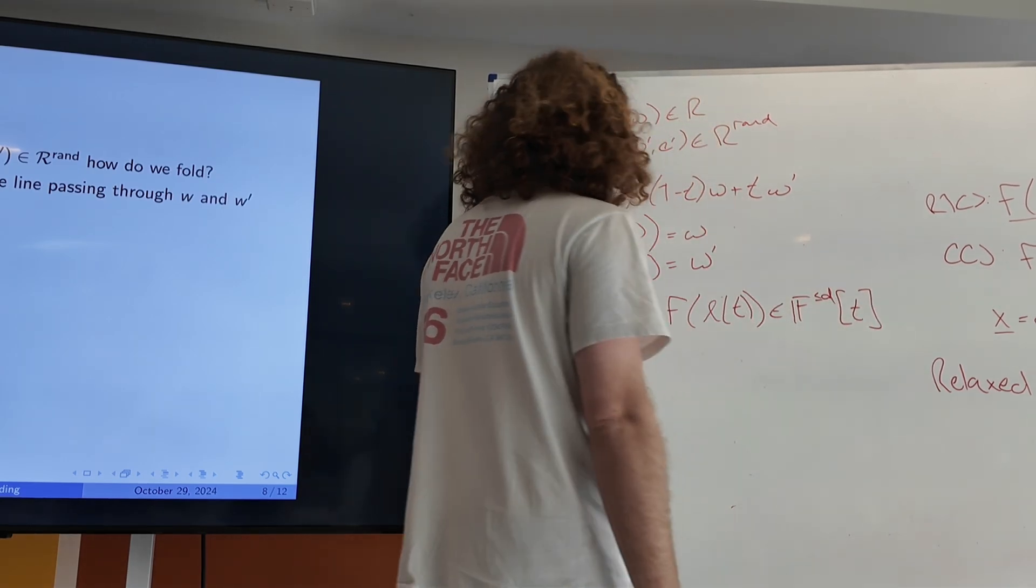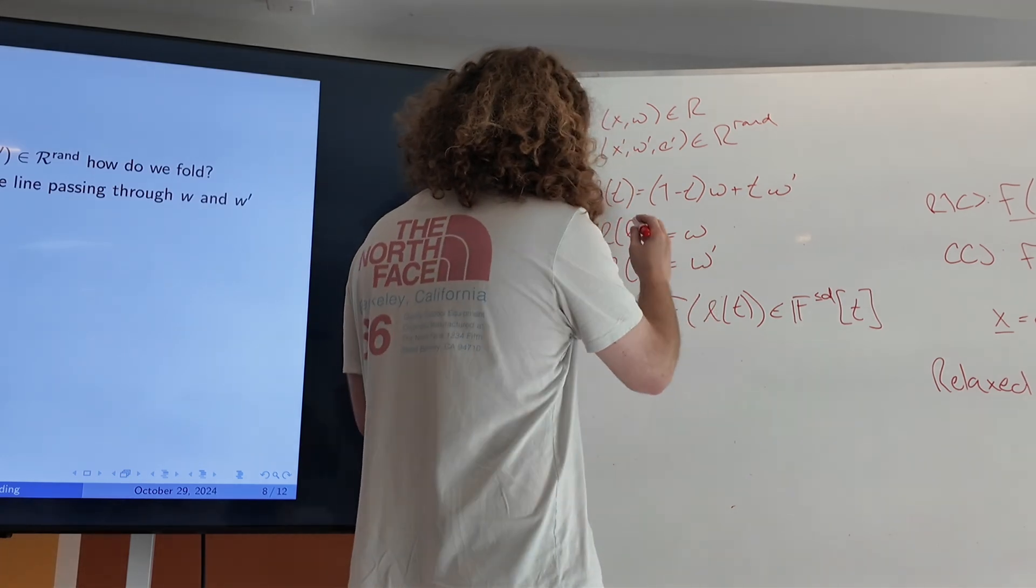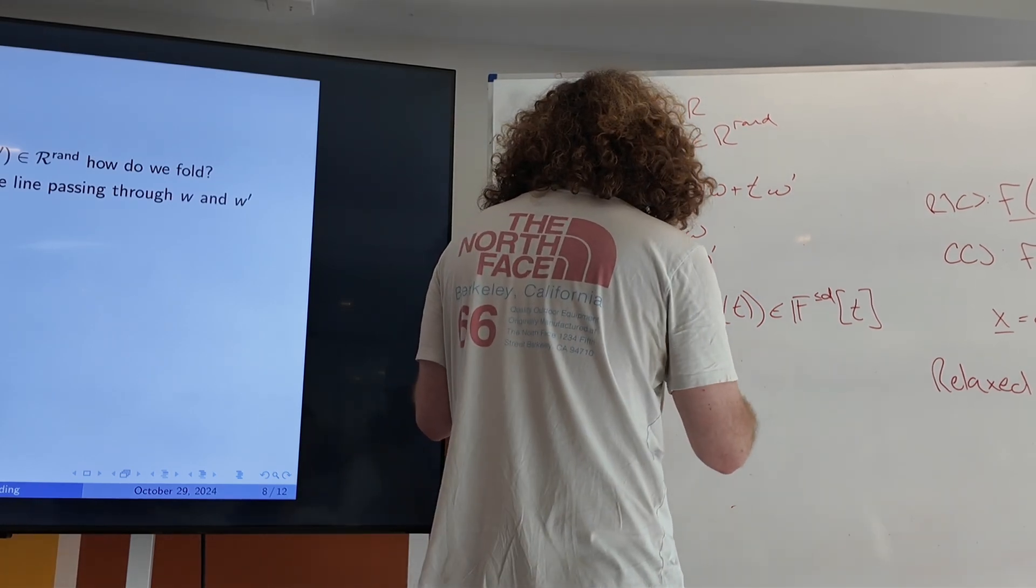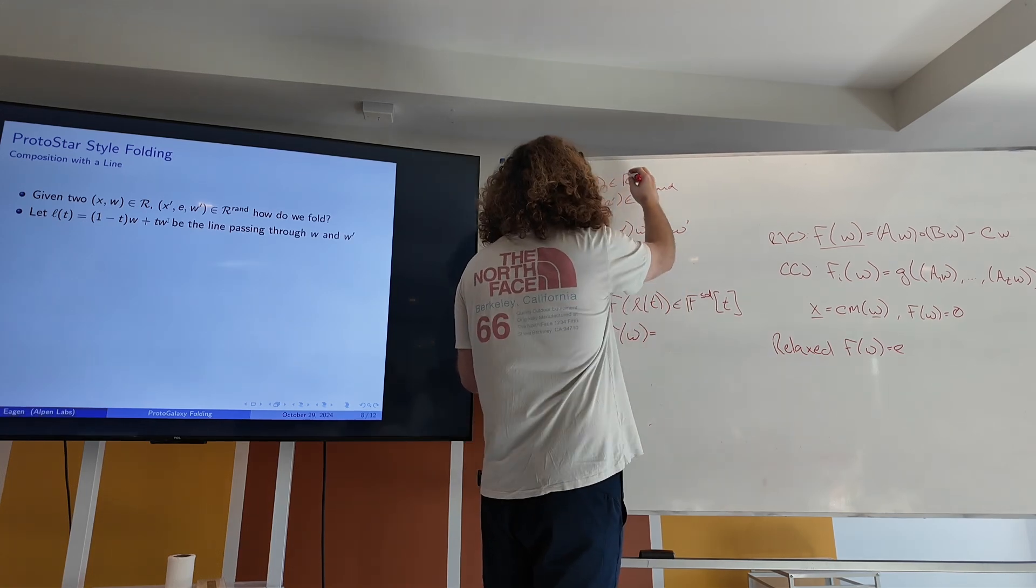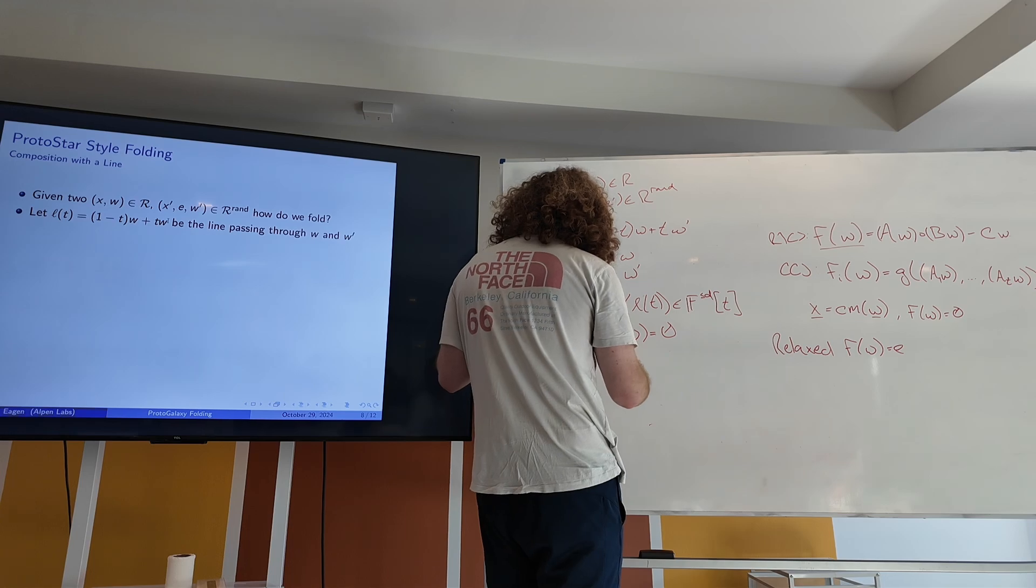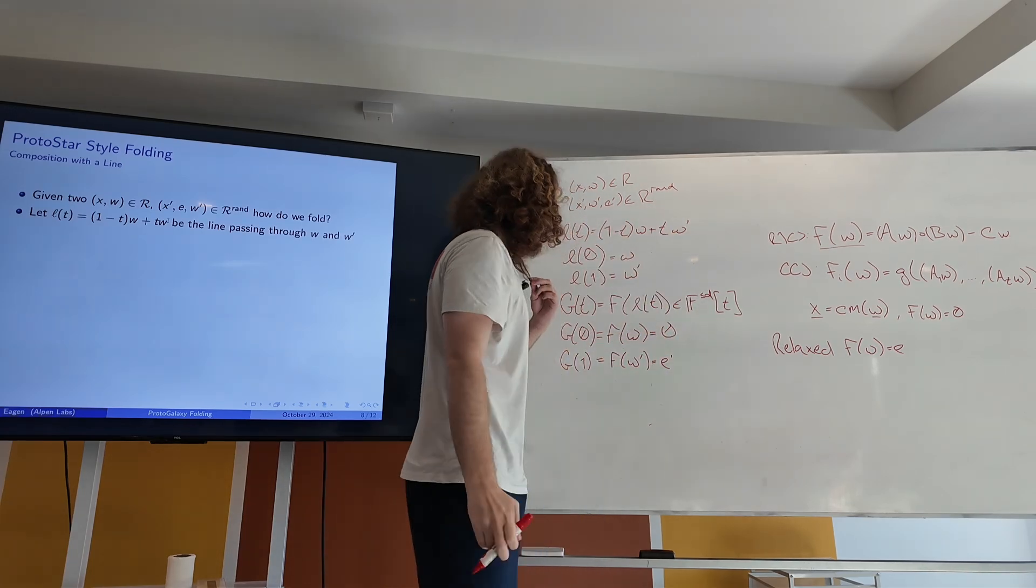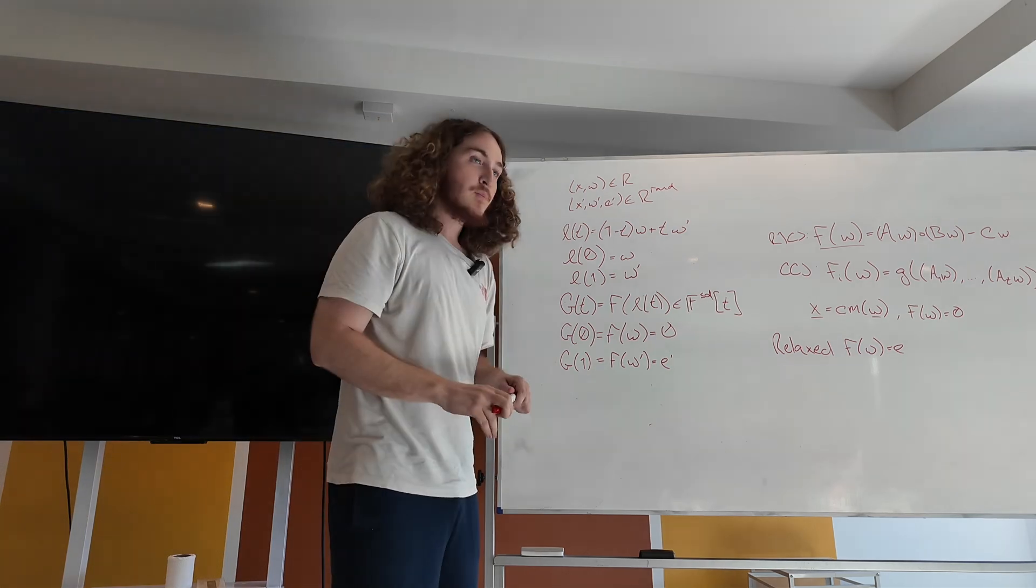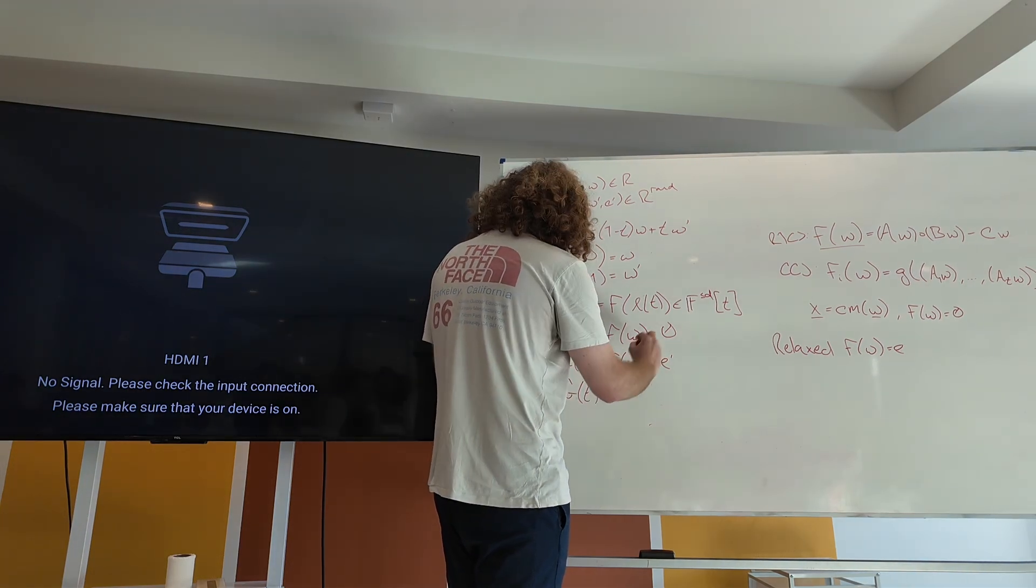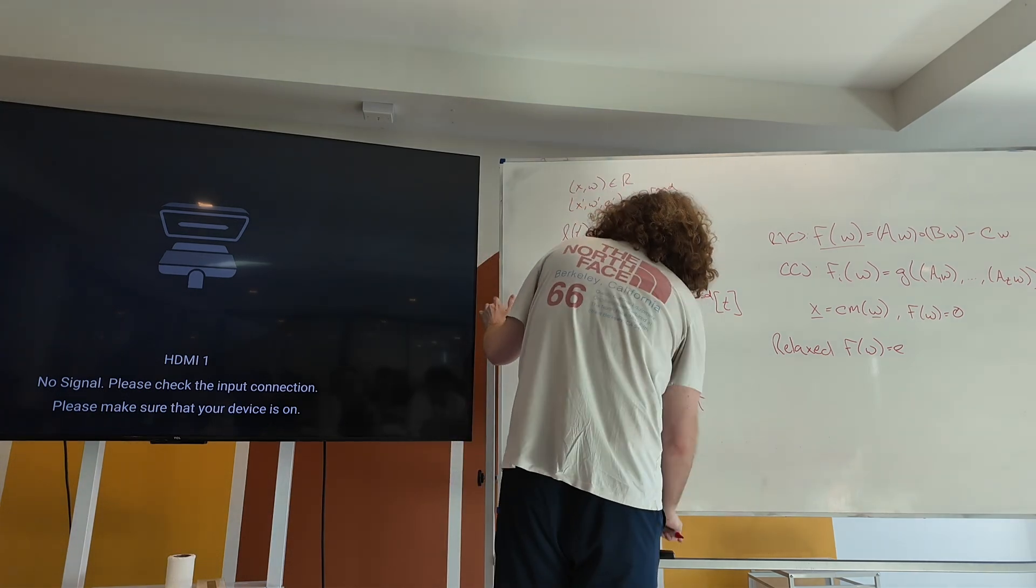This technique is very old, it's used all over the place. The basic idea is we define a polynomial, we want to define a line through our two witnesses. We have L of t equals 1 minus t times w plus t times w prime. So we have this line. When we evaluate it at 0, this term will go to 1 and this will go to 0, so it equals w. If we evaluate it at 1, we get w prime.